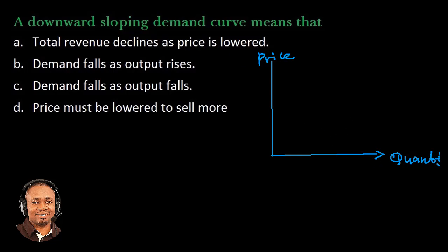Alright, so the demand curve is this downward slope from left to right, and this is as a result of the prices. The prices are going up in the vertical direction. Let's say this is 50, this is 40, this is 30, and this is 20. And the horizontal, the quantity also increases in the right direction. So if we have let's say 100, 200, 300, and this is 400.